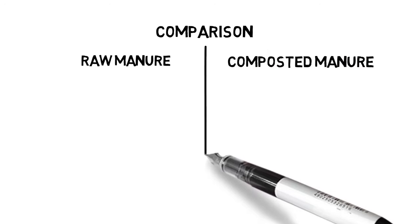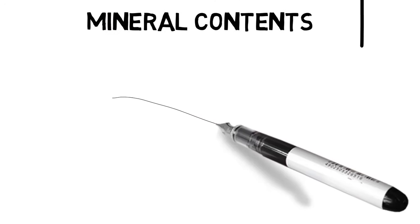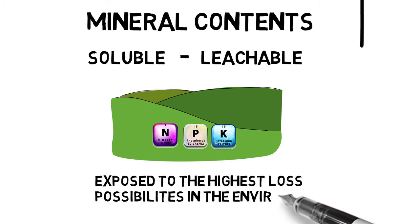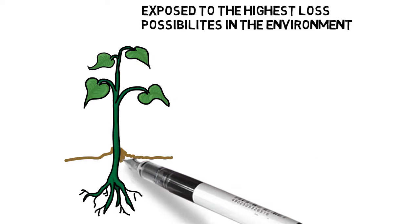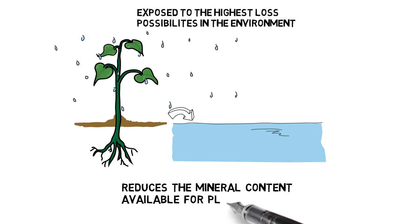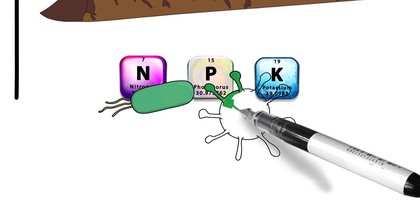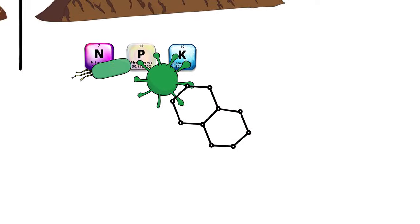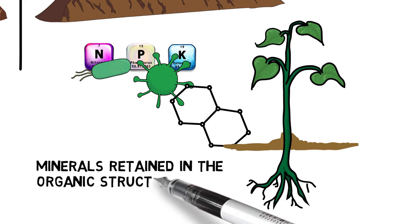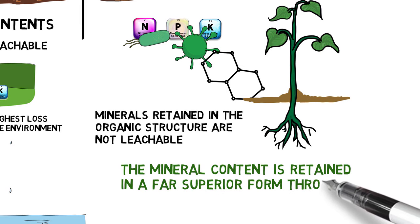The next comparison between raw manure and composted manure is the mineral contents. In raw manure, the mineral contents are soluble and leachable, which means they are exposed to the highest loss possibilities in the environment. Rain, water, and other microbes accessing that soluble mineral base reduces the mineral content available for plants. On the other hand, in composted manure, the minerals are restructured through decomposition into organic structures and forms which are far more retained in the soil reserves, held in organic structures and microbial bodies which are not leachable.